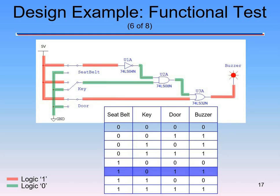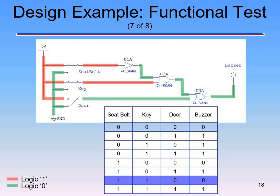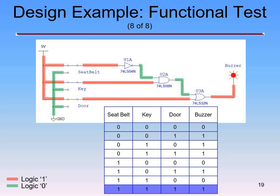One-zero-one: buzzer should turn on. In MultiSim, we draw the circuit, hit the play button, and toggle the three switches. One-one-zero: seat belt and key tied to five volts, door going to zero — buzzer is off. One-one-one: everybody gets five volts, there's a one going to the OR gate, and the buzzer turns on.